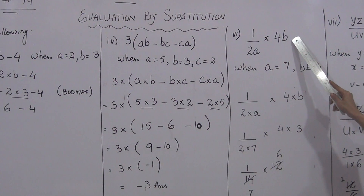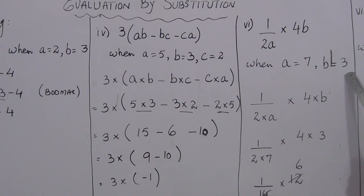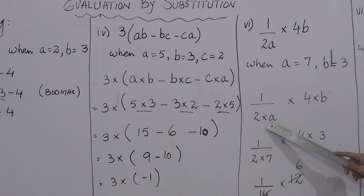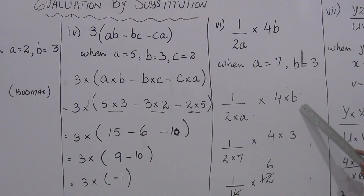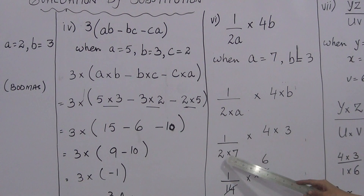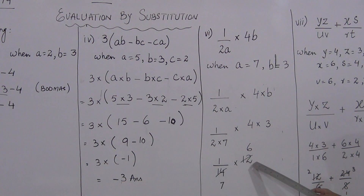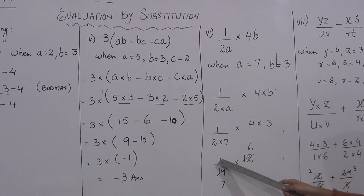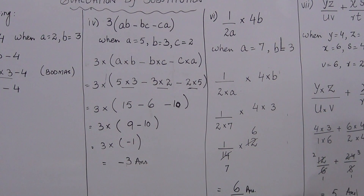Question number 6 is: 1 upon 2 × A × 4B, when A is equal to 7 and B is equal to 3. Expand the expression: 1 upon 2 multiplied by A, and 4 multiplied by B. Replace the values: A is 7, B is 3. So 1 upon 2 into 7 is 1 upon 14, and 4 into 3 is 12. Cross multiply — both are divisible by 2: 2 sevens are 14 and 2 sixes are 12. Numerators left are 1 and 6; multiply: 1 into 6 is 6. Denominator is a's value 7. So the answer is 6 upon 7.